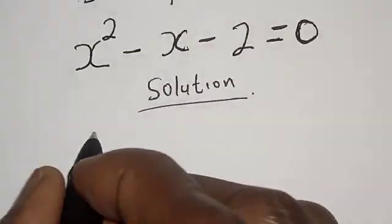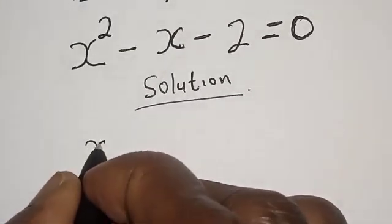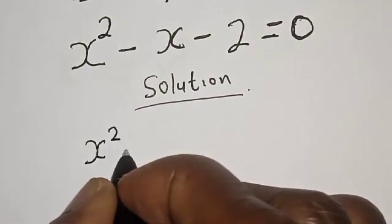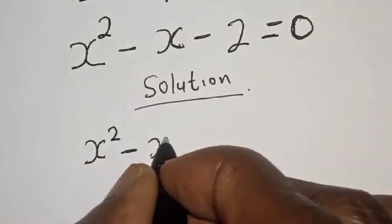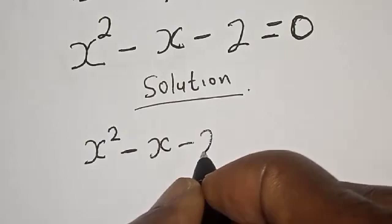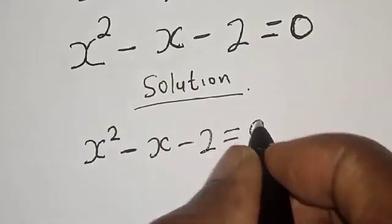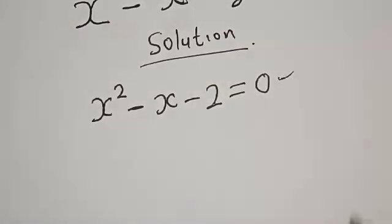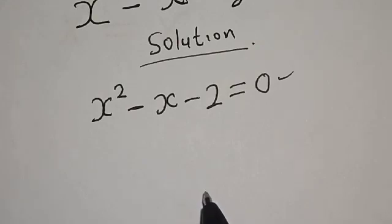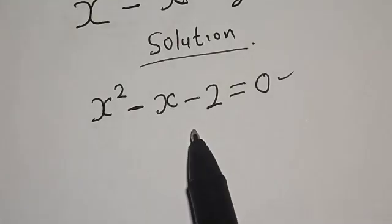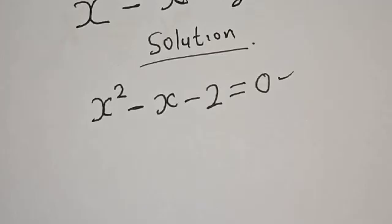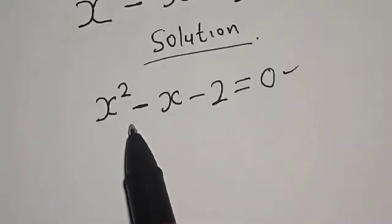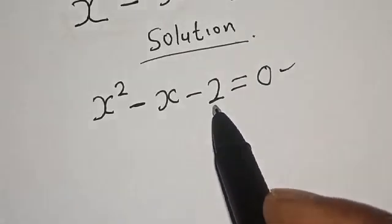Solution. We have the given equation s squared minus s minus 2 is equal to 0. This is a quadratic equation. We can solve this by using either the factorization method or the quadratic general formula. In this case we are going to consider both methods. Let's use the factorization method first.